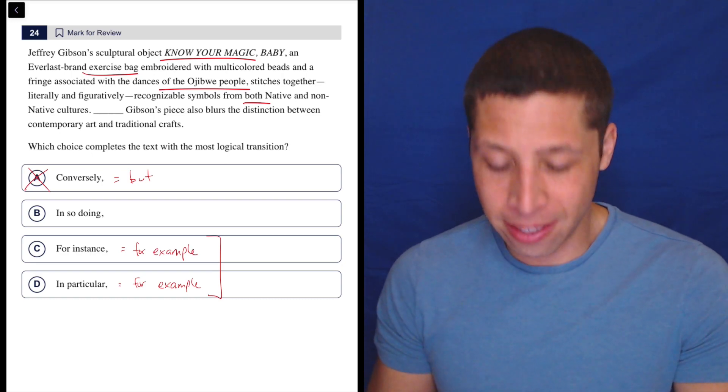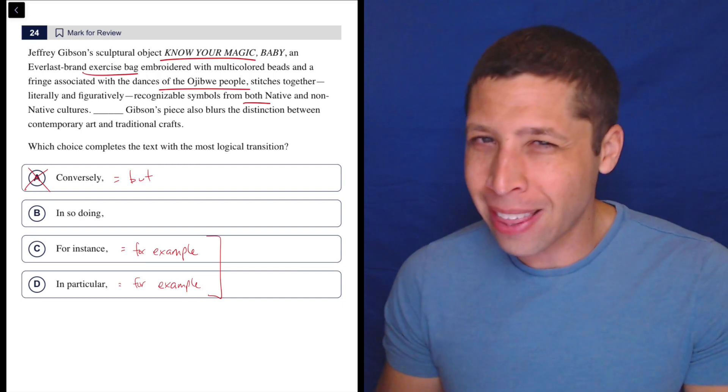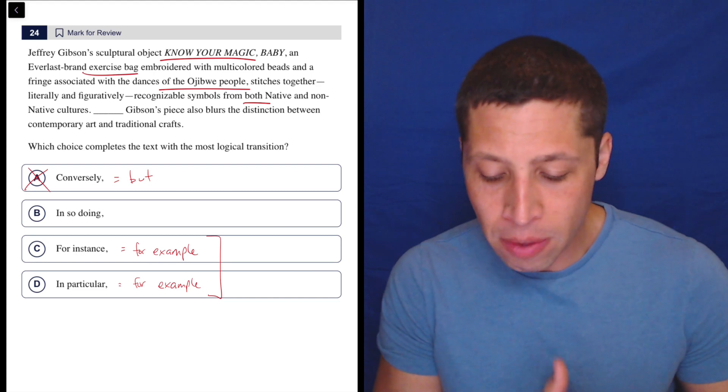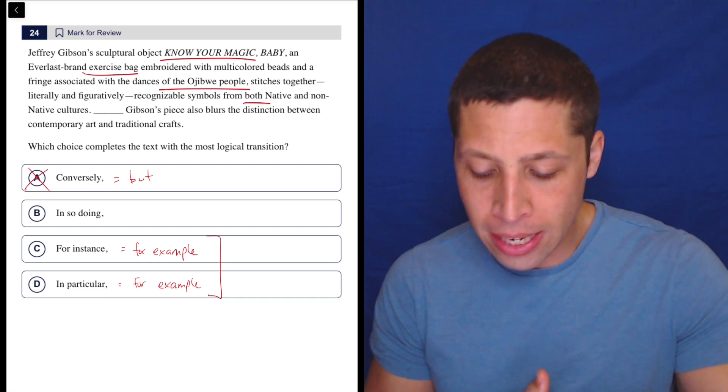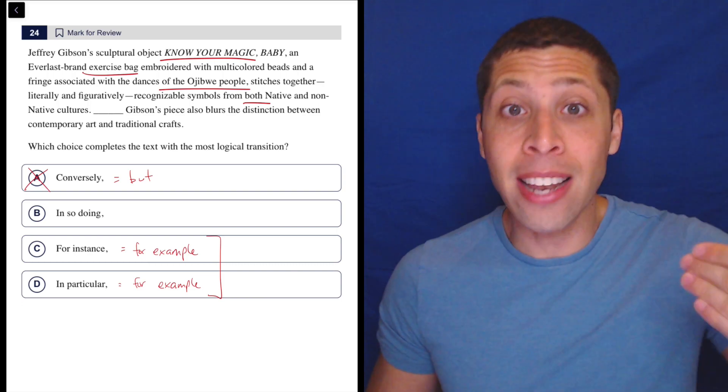But now I can maybe think about it and just be absolutely sure. Is the second sentence an example of the first? Well, he's blending things, but they seem to be two different kinds of things, right? They're not then giving me an example of him blending the native and non-native cultures. In fact, that's what the first sentence itself does. That is the example.